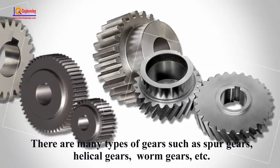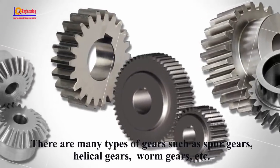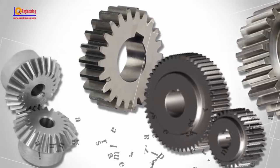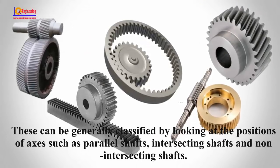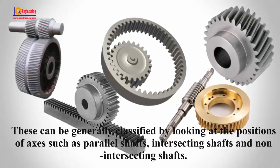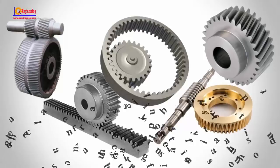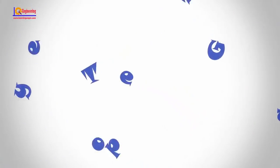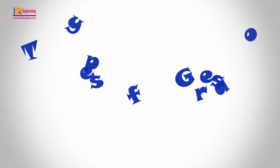There are many types of gears: spur gears, helical gears, worm gears, etc. These can be generally classified by looking at the positions of axes — parallel shafts, intersecting shafts, and non-intersecting shafts. In this video, we will learn about different types of gears used to transmit power from one shaft to another shaft.